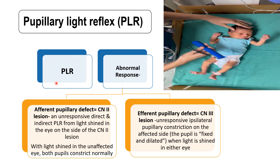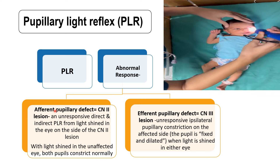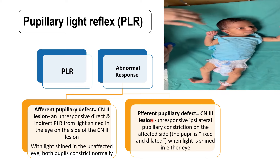Abnormal response to the pupillary light reflex can be seen whenever there is a lesion in either the afferent or efferent pathway. The afferent of the pupillary light reflex is the second cranial nerve and the efferent is the third cranial nerve. An unresponsive direct and indirect pupillary light reflex occurs when light is shined in the eye on the side of a second cranial nerve lesion.